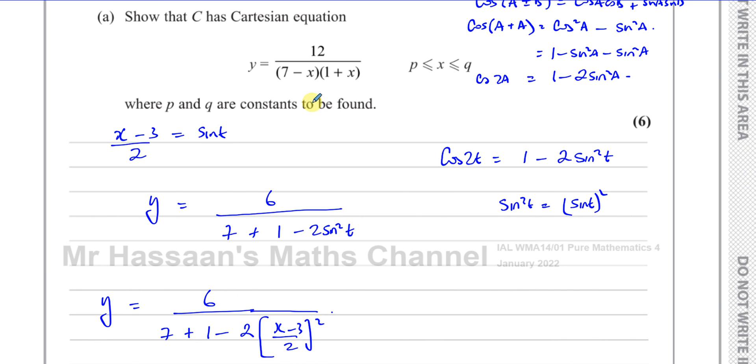So Y is equal to 12 over 7 minus X times 1 plus X. And that's the answer. 7 minus X times 1 plus X, that's right.